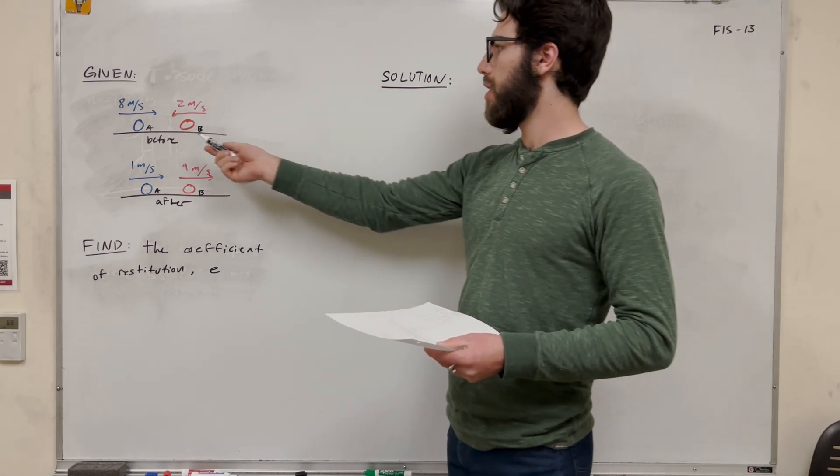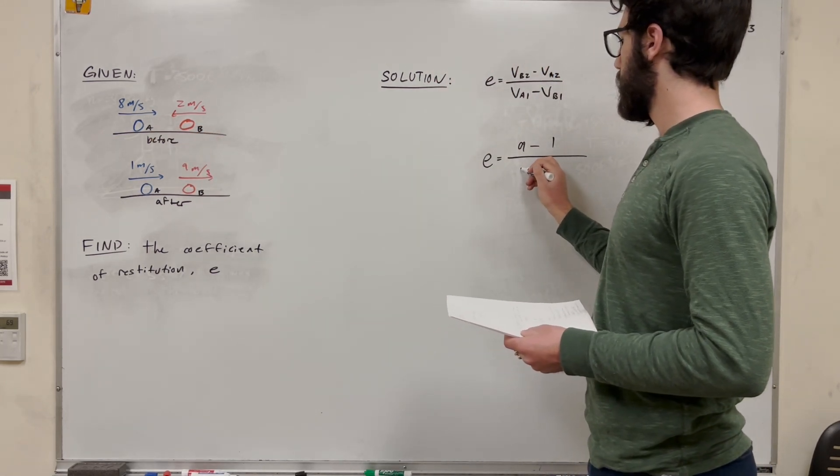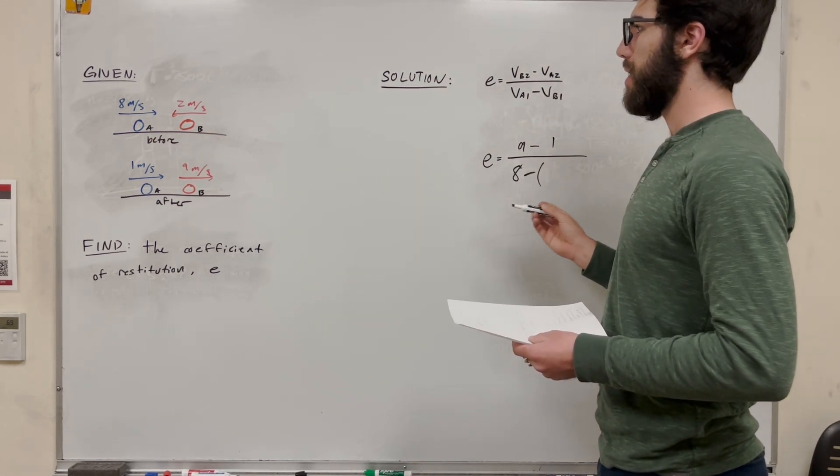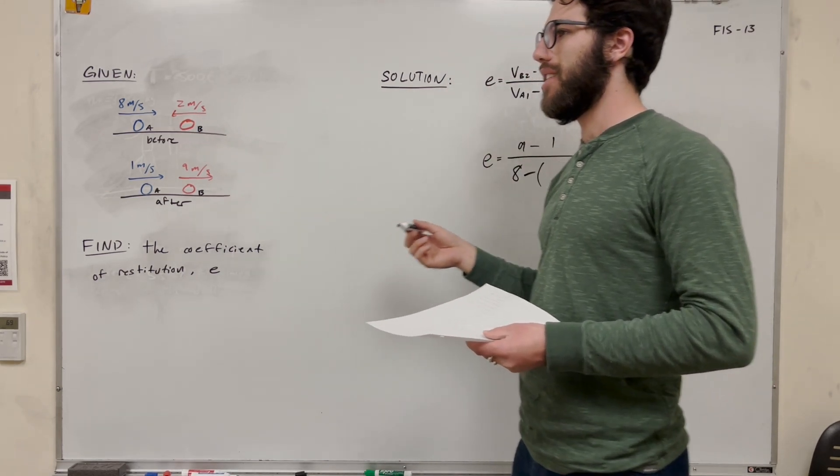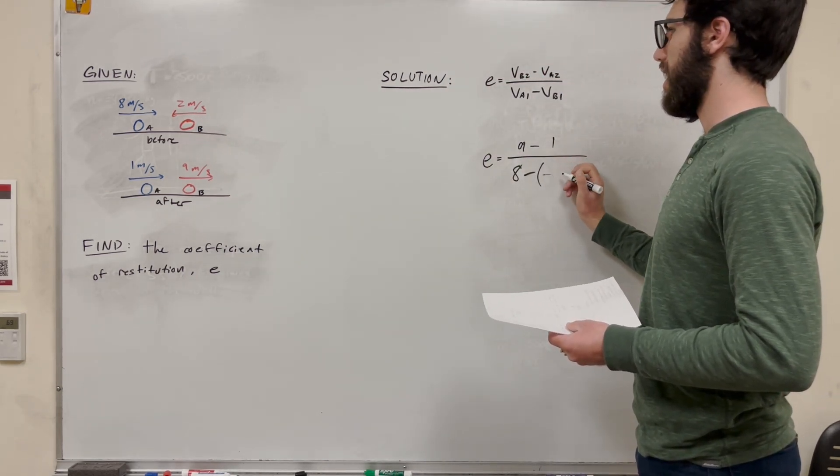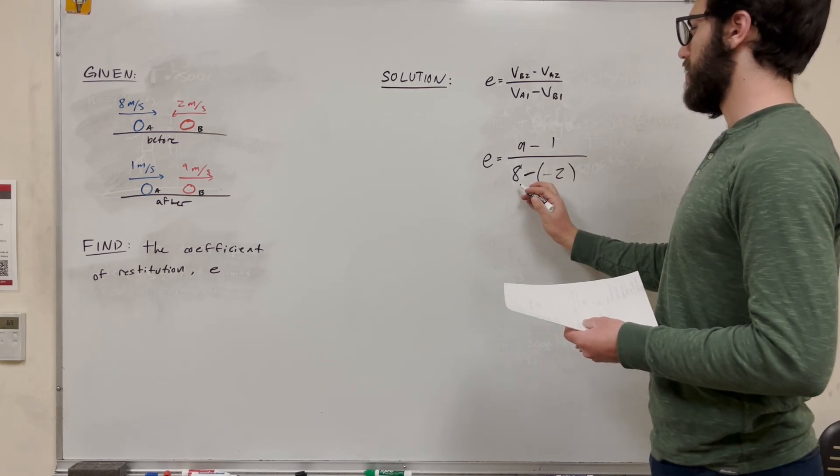Over the a1, 8 meters a second, minus. But then this is doing negative 2 meters a second. So if it's going against the grain, negative direction, you need to put that extra negative in. So this is effectively adding this together.